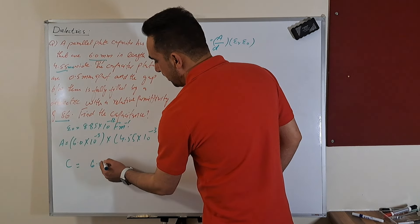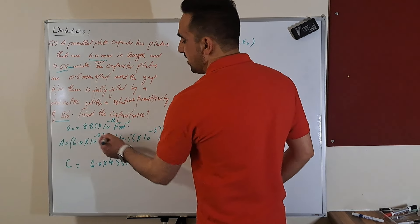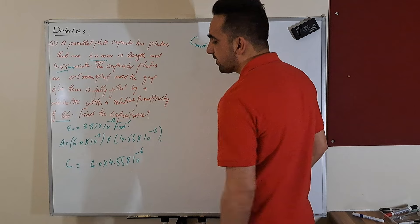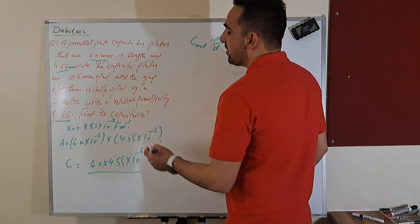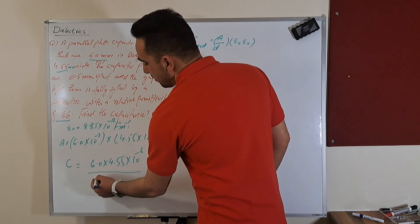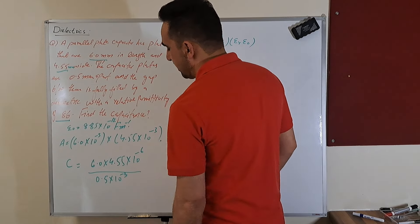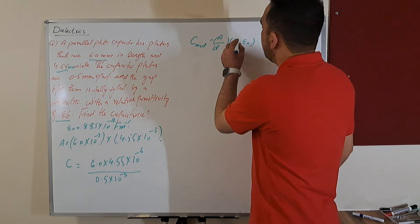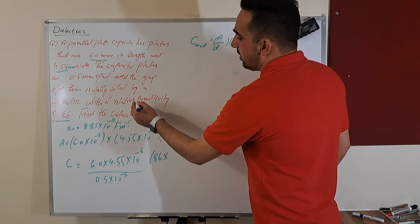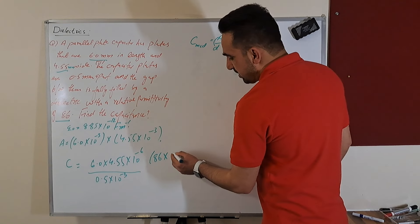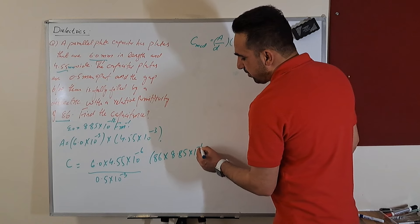So we have 6.0 multiplied by 4.55 times 10 to the power minus 6, divided by the separation between the plates which is 0.5 mm, so 0.5 multiplied by 10 to the power minus 3. Then we have the relative permittivity of 86 multiplied by the permittivity of free space, 8.85 times 10 to the power minus 12.